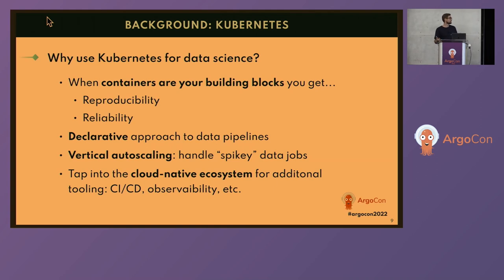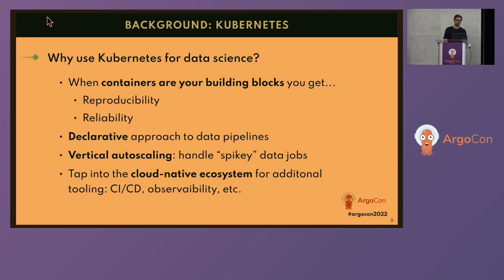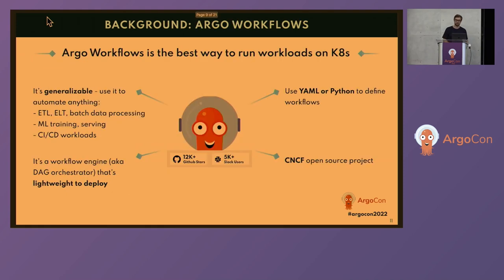Why use Kubernetes for data science? For data teams newer to Kubernetes: when you use containers as building blocks in the pipeline, you get reproducibility of the pipeline — you can share parts or the full pipeline with different people on your team — and you get improved reliability given better dependency management. Kubernetes also gives you a declarative approach to pipelines, so you can essentially define what outputs you want and let Kubernetes handle the autoscaling. It's a great complement to the horizontal scaling that Spark offers, and also introduces the ability to vertically scale depending on the compute you want.